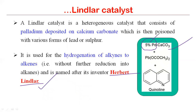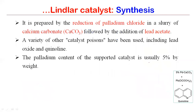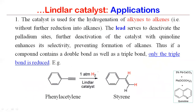How can we prepare Lindlar's catalyst? The preparation is very easy — we add palladium chloride to a slurry of calcium carbonate, then add lead acetate as the catalyst poison. The application is the most important part, because whenever we study a catalyst we need to know the exact use of that particular agent.